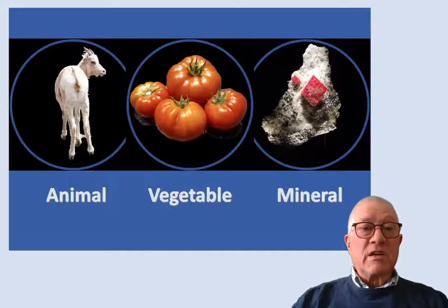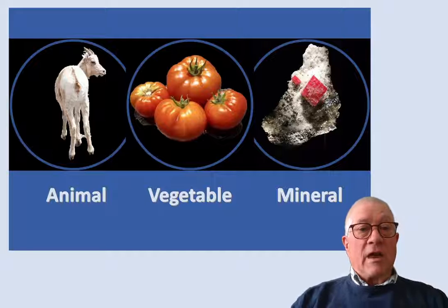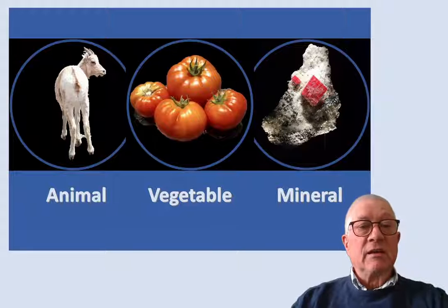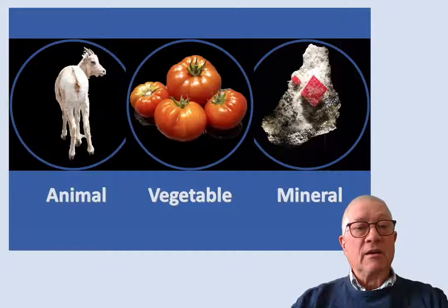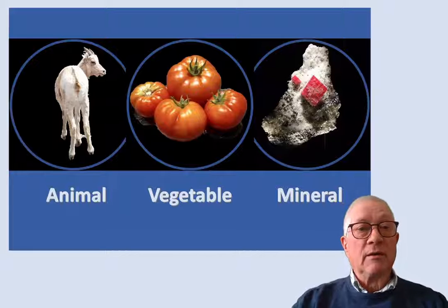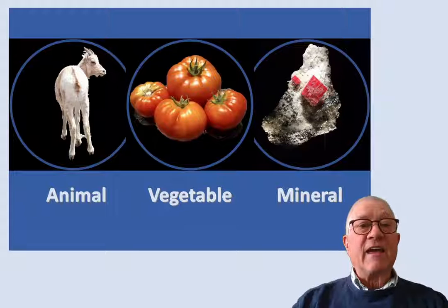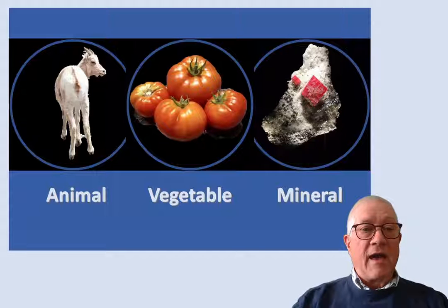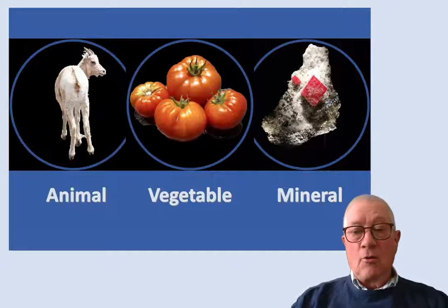These groupings were used by Carolus Linnaeus when he came up with his classification method in 1758, and they persisted well into the 19th century and the time of Darwin. Even today, children growing up play 20 questions, sometimes called animal, vegetable, or mineral.